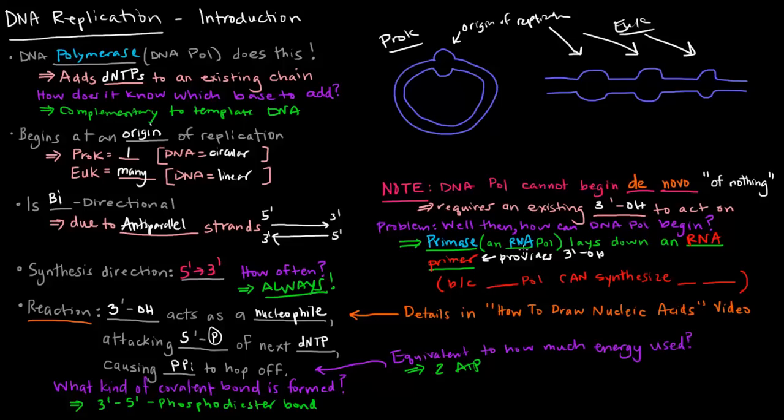So why is it that primase, an RNA polymerase, can lay down a primer? The reason is because RNA polymerase can synthesize de novo. So it's a little bit more powerful in that sense, that it can synthesize de novo, while DNA polymerase cannot.